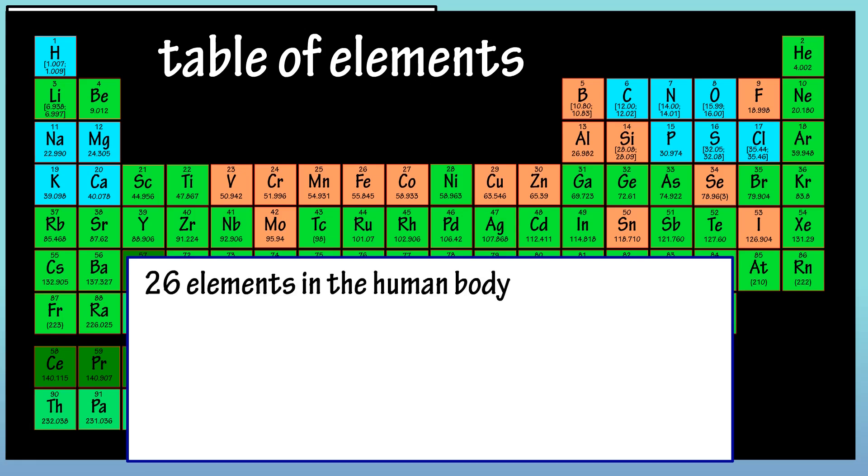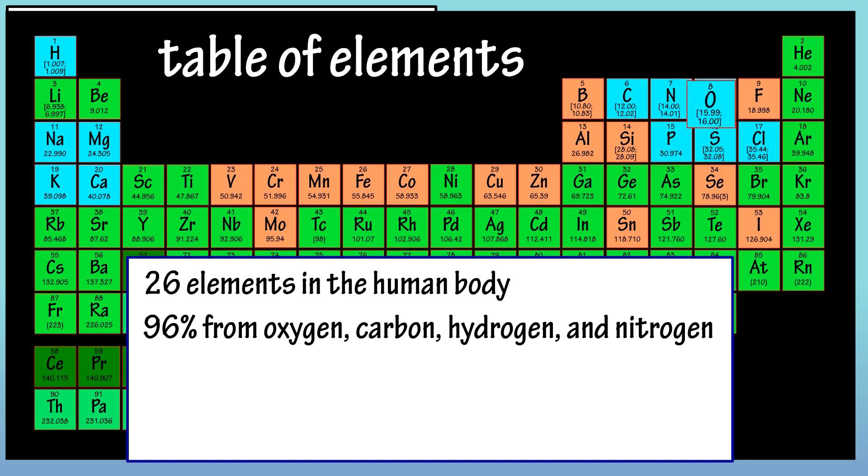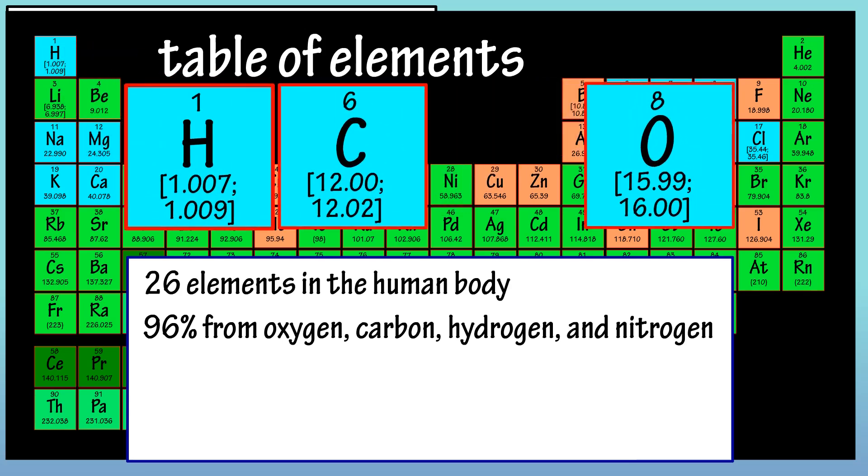There are a total of 26 elements that are present in the human body, and the material in the human body is made up of about 96% from 4 of these elements: oxygen, carbon, hydrogen, and nitrogen.